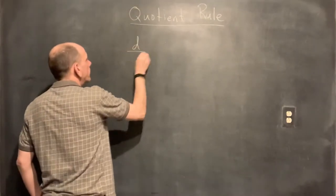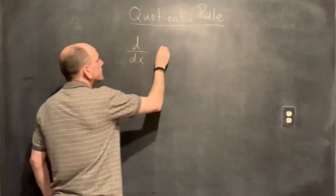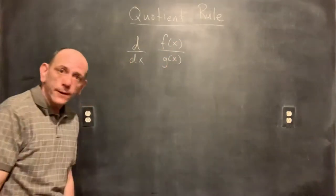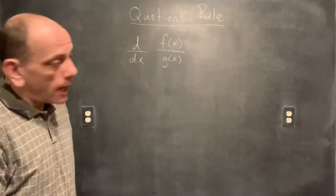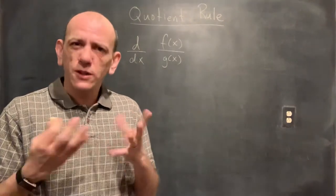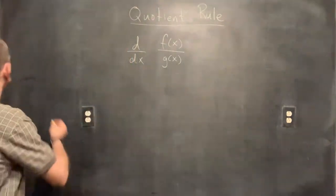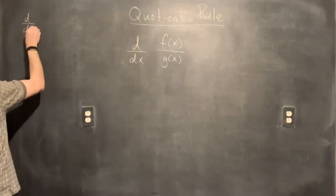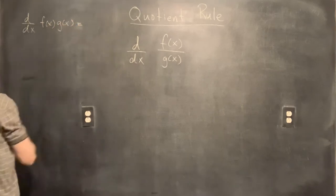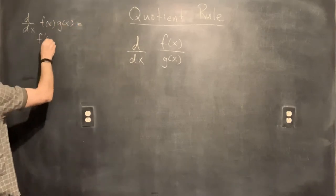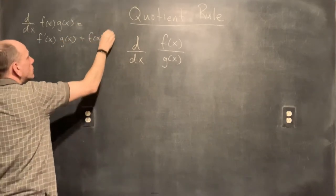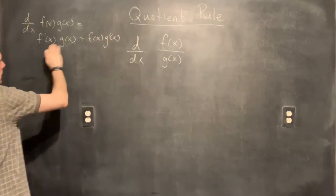So what we're looking for is the derivative with respect to x of f(x) over g(x) — the quotient. We've already developed the product rule and the chain rule, so let's quickly remember those. The derivative with respect to x of f times g is the derivative of the first times the second plus the first times the derivative of the second. That's our product rule.